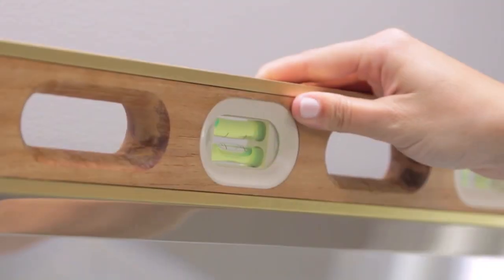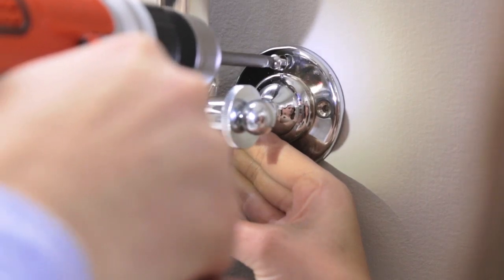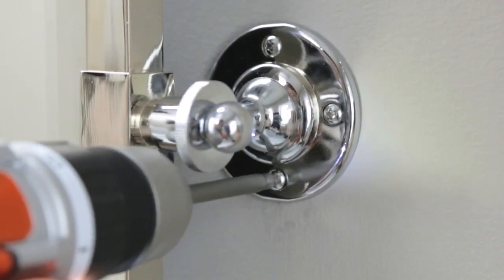Now make sure the mirror is level from left to right. Attach the other mounting bracket and with the mirror level, secure it to the wall.